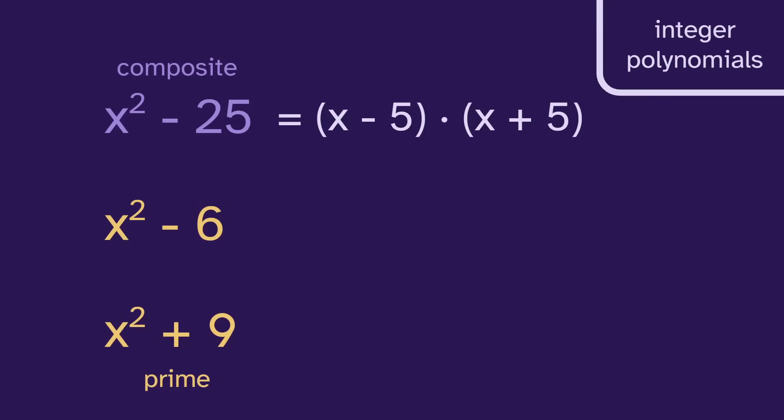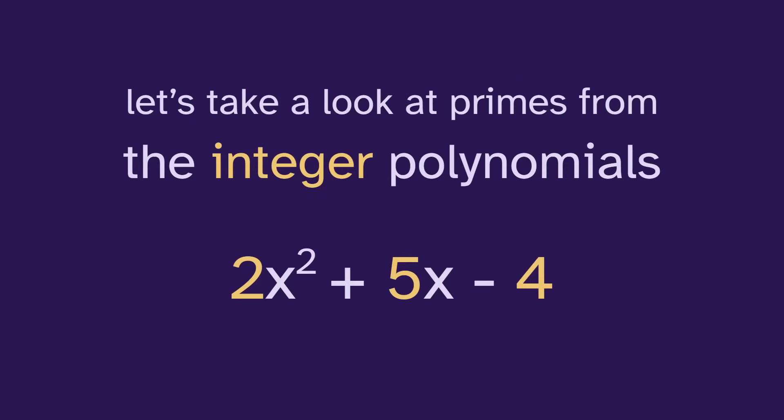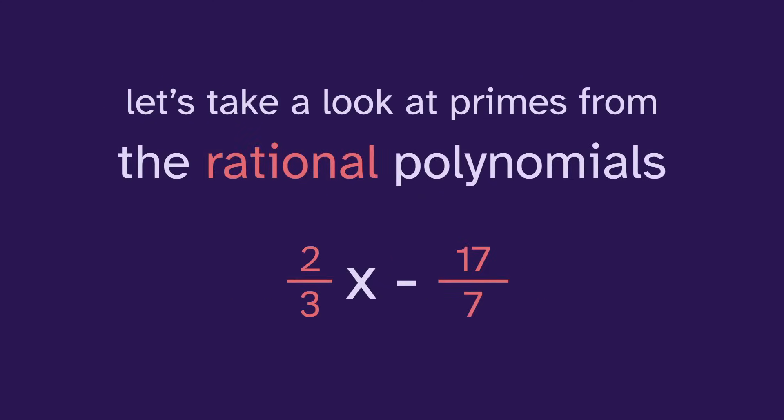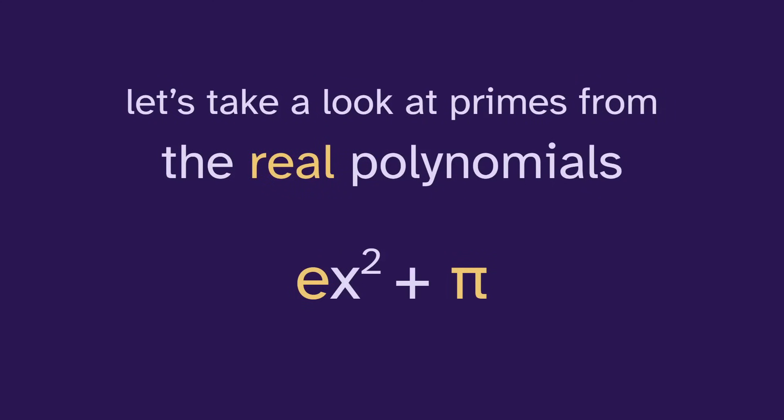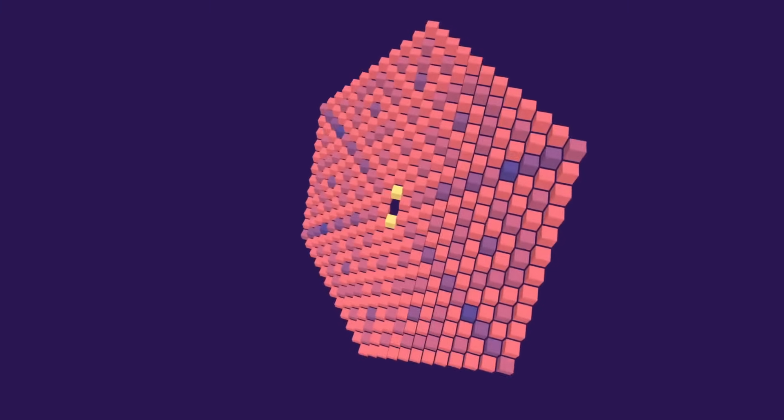So that leaves us with just the polynomial on top as composite. But we could make it prime too. Can you think of a domain where all of these are prime? I'll give my example later, but first let's take a look at the primes from the integer polynomials, the rational polynomials, the real polynomials, and the complex polynomials. And along the way, we'll explore some fun ways to visualize the primes.